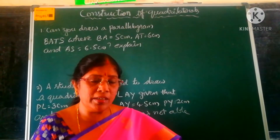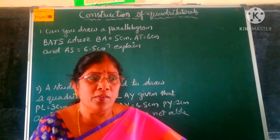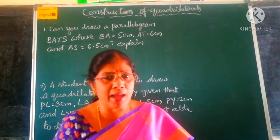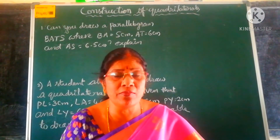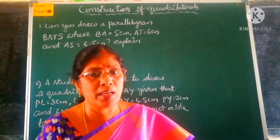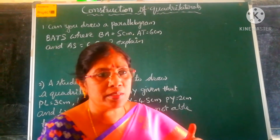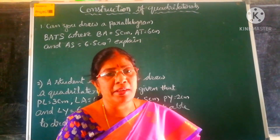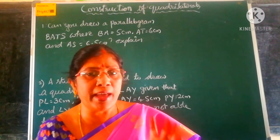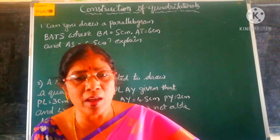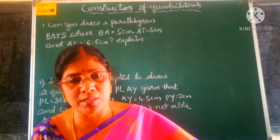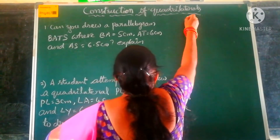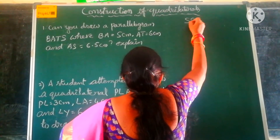In the earlier classes, we have learnt that if 4 sides and an angle are given, we can construct a quadrilateral. Now, in this session, let us learn: if 4 sides and 1 diagonal are given, how can we construct a quadrilateral? 4 sides and 1 diagonal.